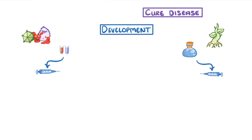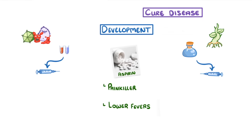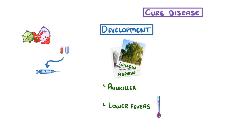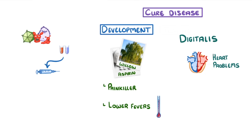Let's take a look at three examples. Aspirin is a common painkiller that can be used to lower fevers. It's now super common, but it was originally developed from a chemical found in the bark of willow trees. Meanwhile, digitalis, which is used to treat heart problems like heart failure, was originally developed from a chemical found in plants known as foxgloves. In fact, this originally made the plants so valuable that they almost went extinct in the wild.